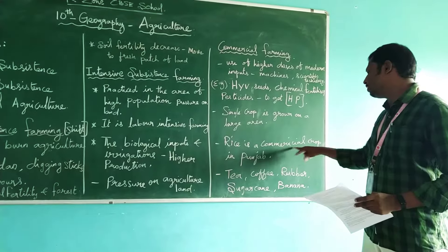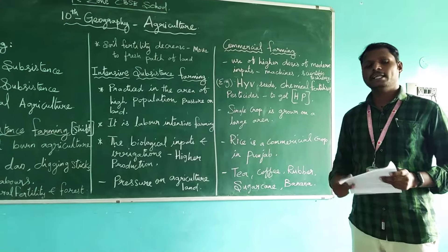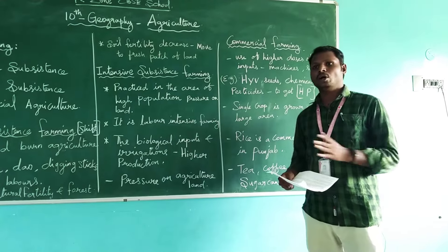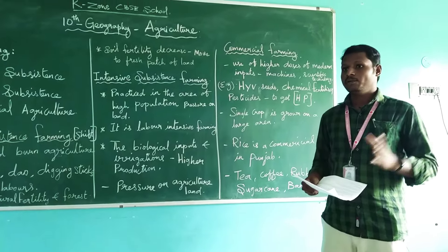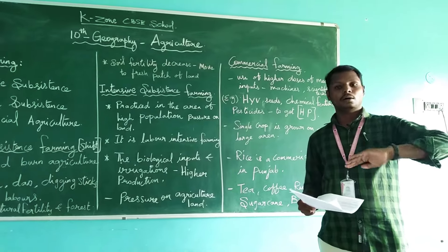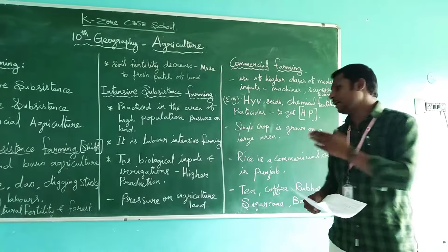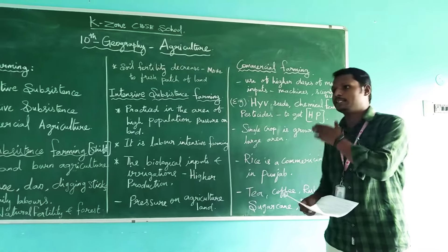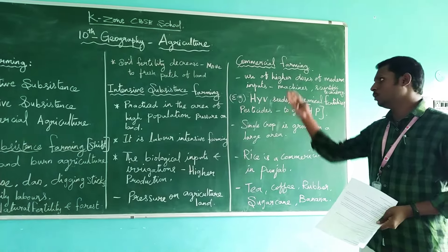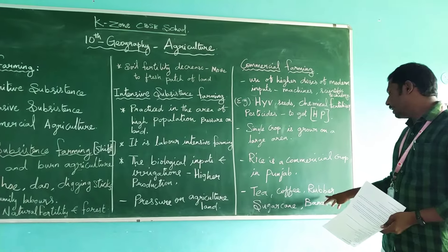For example, rice is a commercial crop in Punjab — they cultivate large amounts of rice there, not for domestic purpose but mainly to sell. Examples of commercial crops include tea, coffee, rubber, sugarcane, and banana.